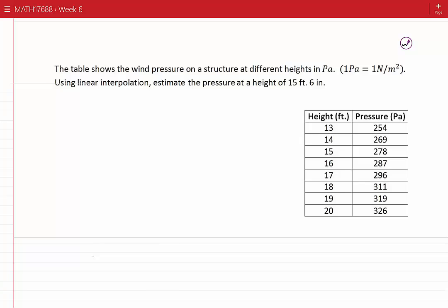The following table shows the wind pressure on a structure at different heights in Pascals. One Pascal is one Newton over one square meter. Using linear interpolation, estimate the pressure at a height of 15 feet 6 inches.